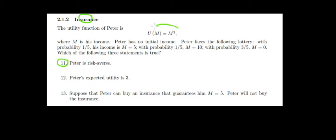We have a utility function which is m to the power of 3, where m is our income. Now we have the following lottery: with probability 1/5 we could get 5 euros, with probability 1/5 we could get 10 euros, and with probability 3/5 we could get 0 euros. Which of the following is true?